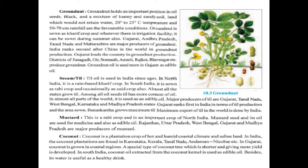The first oil seed is groundnut. Groundnut holds an important position among oil seeds. A blackened mixture of loamy and sandy soil, land which would not retain water, temperature of 20 to 25 degree Celsius, and 50 to 70 cm of rainfall are favorable conditions. Groundnut is sown as a kharif crop and wherever there is irrigation facility it can be sown during summer also. Gujarat, Andhra Pradesh, Tamil Nadu, and Maharashtra are major producers. India ranks second after China in groundnut production and Gujarat leads the country.